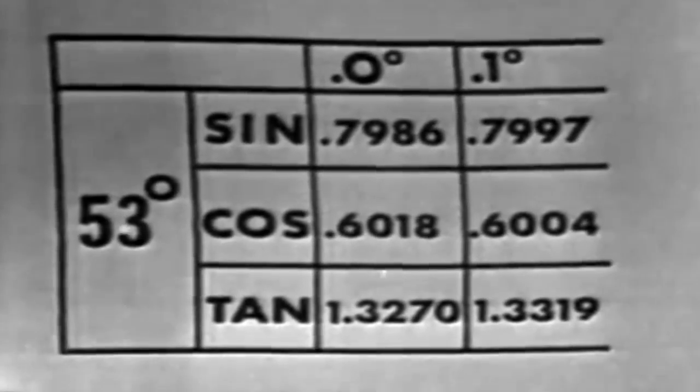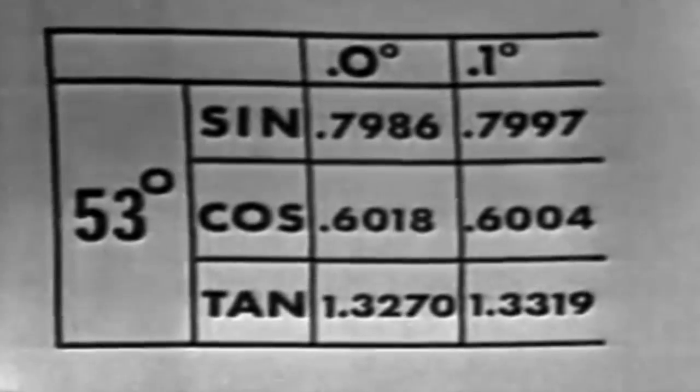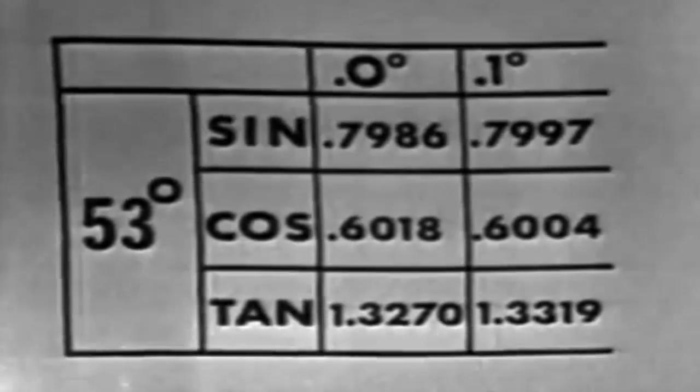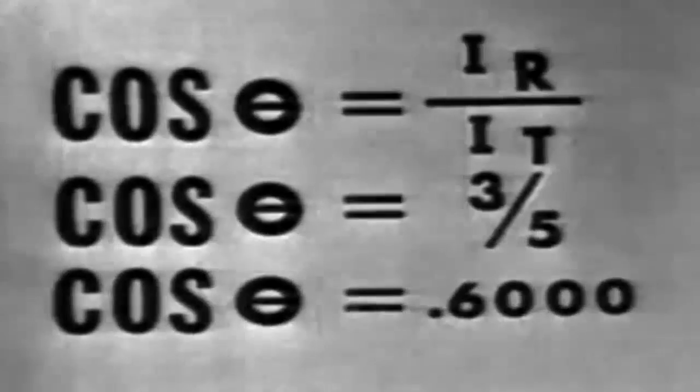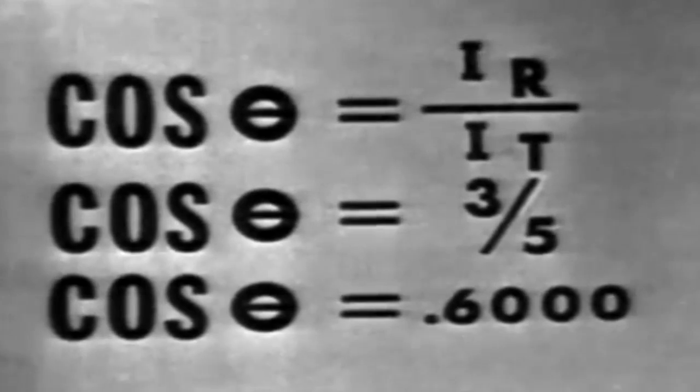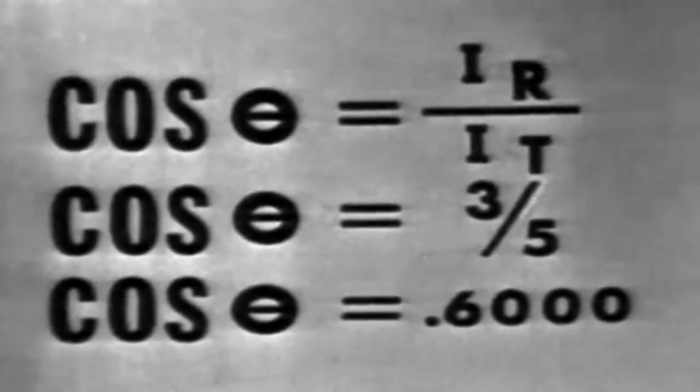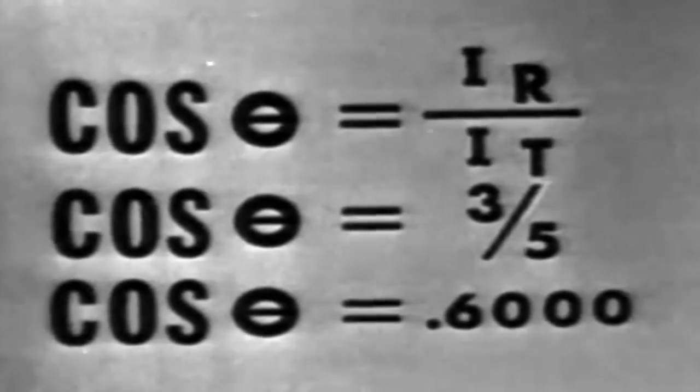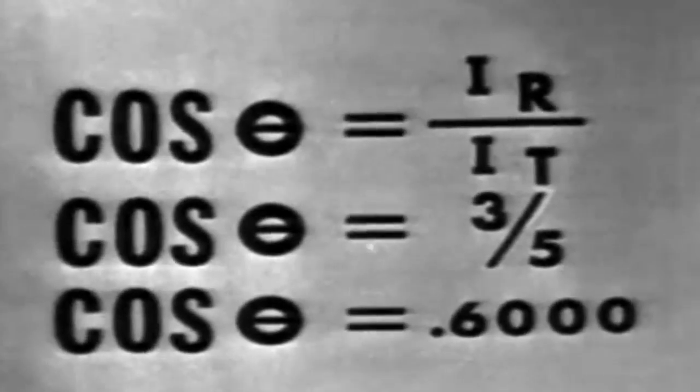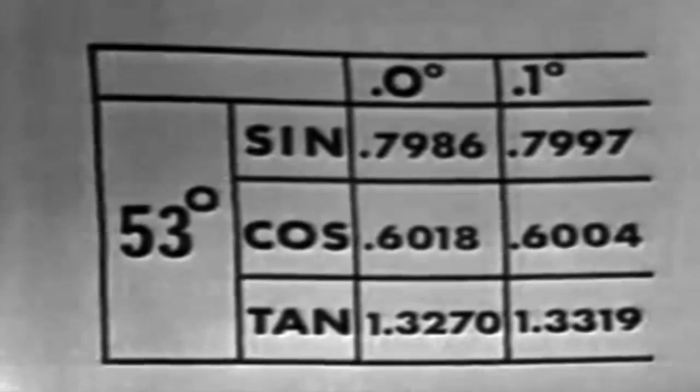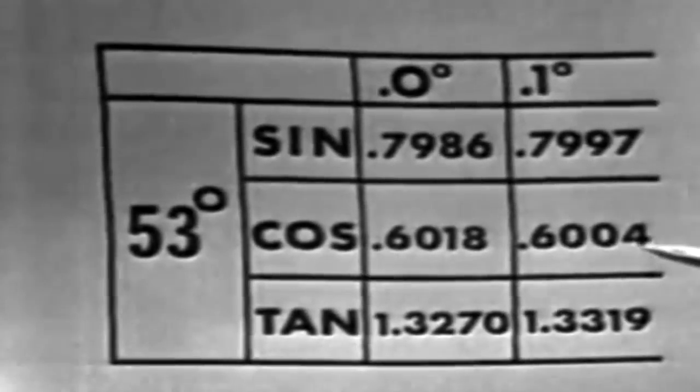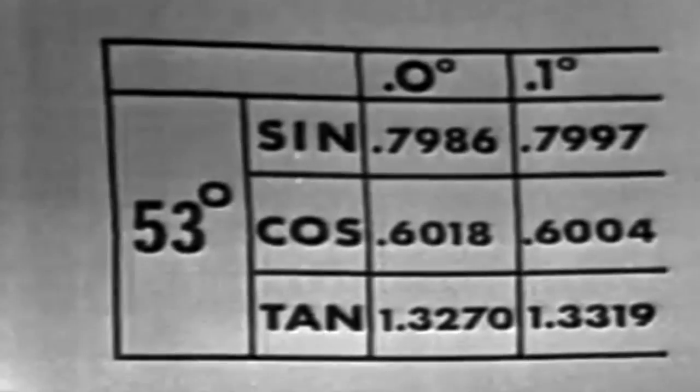However, other trig functions may sometimes be more convenient. Many times the cosine is used because it also equals the power factor. Now, let's solve for angle theta using the power factor, or the cosine of theta. The cosine of theta is equal to IR over IT, or 3 over 5, and therefore 0.6. Going back to the trig tables, we find that the phase angle for a cosine of 0.6, the nearest one being 0.6004, is again 53.1 degrees.